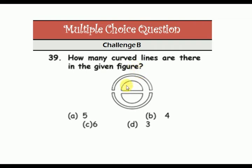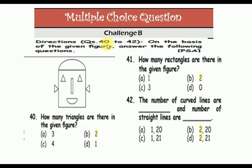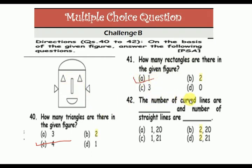How many curve lines are there in the given figure? One, two, three, four, five, and six. Direction: questions 40 to 42. How many triangles are there in the given figure? One, two, three, four. How many rectangles are there? Only one rectangle is in the given figure.